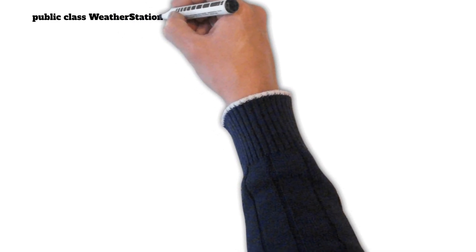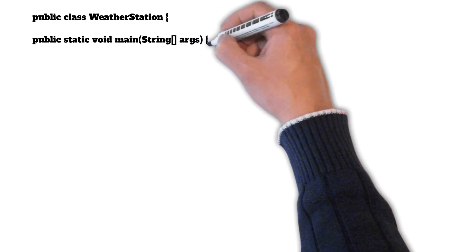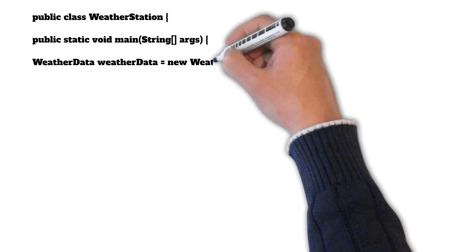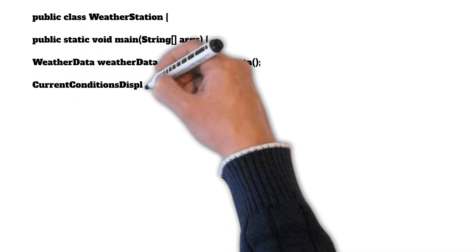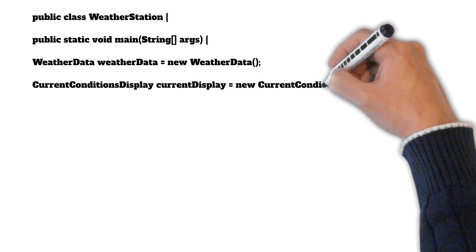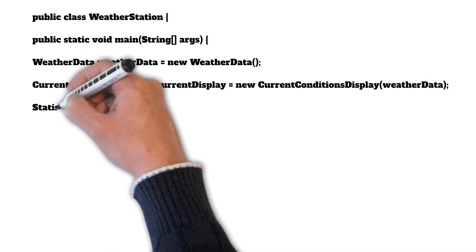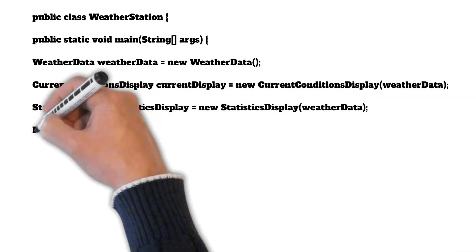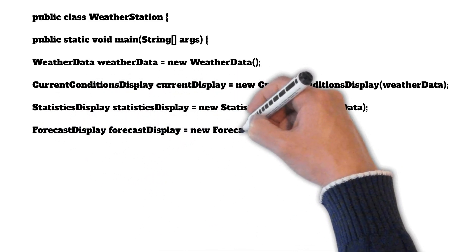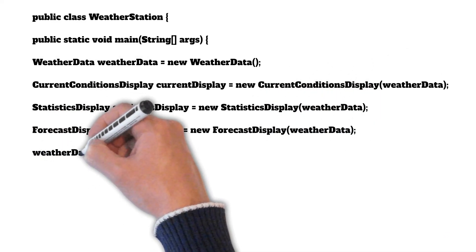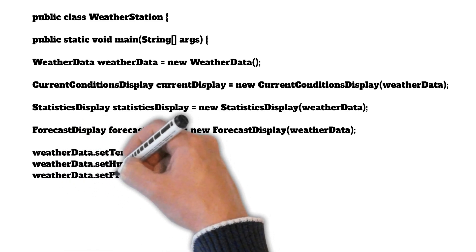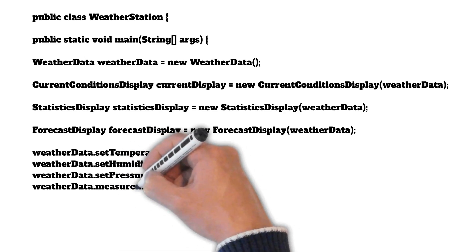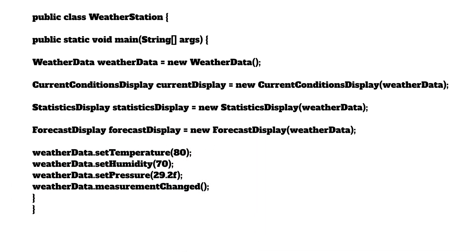To simulate our weather station, we create a WeatherData object and then create three observers: CurrentConditionDisplay, StatisticsDisplay, and ForecastDisplay. When creating all three observers, we pass our subject object — the WeatherData — to their constructors so they can register themselves as observers. After that, if we update some temperature, pressure, and humidity values and call the measurementChanged method, all the observers get notified and their update methods get called.